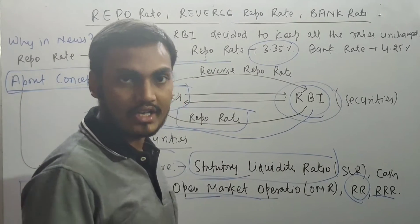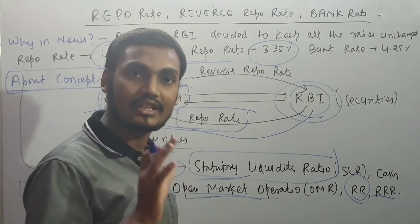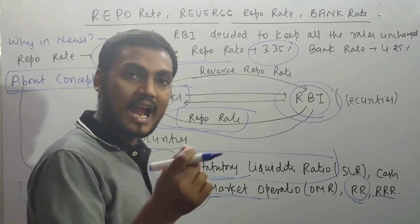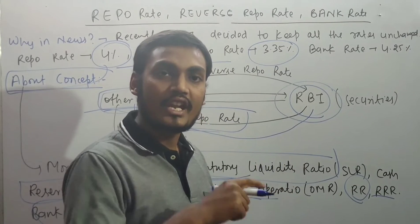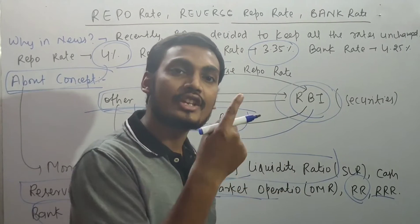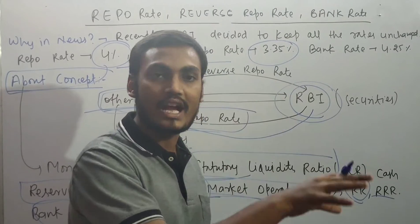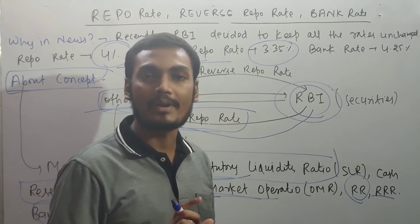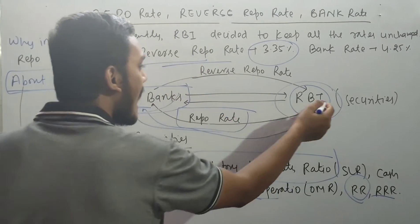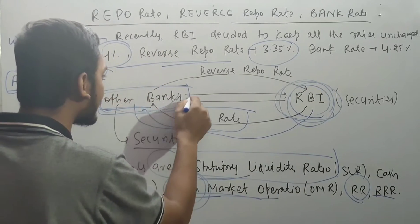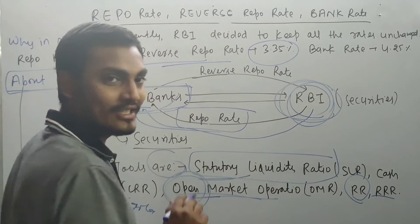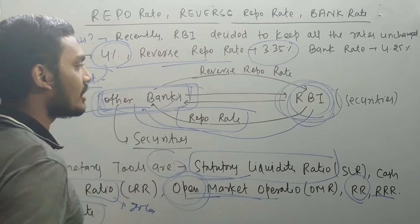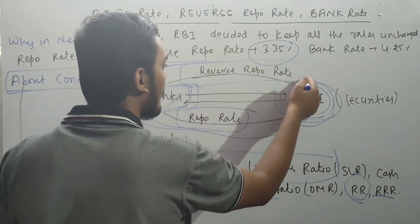The RBI issues securities like government securities, which can be used under open market operations. Recently in Operation Twist, the RBI purchased securities worth around 10,000 crore from other banks, and then the RBI has to pay interest. Similarly, when RBI issues securities and other banks subscribe to them, the RBI has the responsibility to pay interest to those banks. This is known as the Reverse Repo Rate.